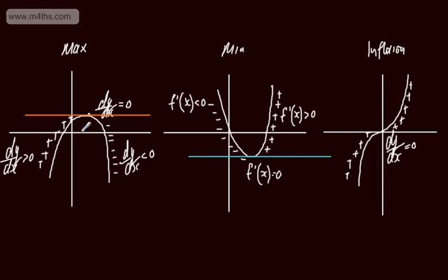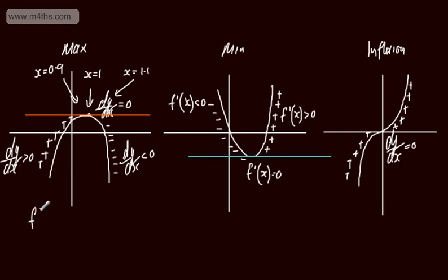We looked at two different methods to determine the nature of a stationary point. The first was the manual way: we find the x-coordinate of the stationary point — say x equals 1 — then consider a value close to 1 on the left, such as x equals 0.9, and one to the right, x equals 1.1. We evaluate f dashed at 0.9 and f dashed at 1.1. If this gives a positive quantity and this gives a negative quantity, it is identified as a maximum.